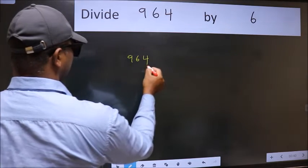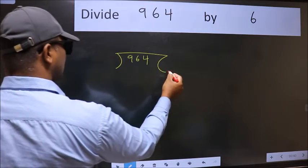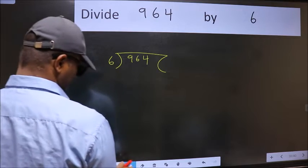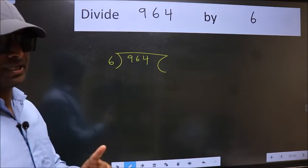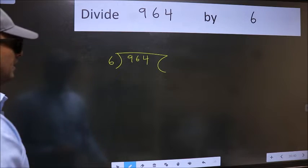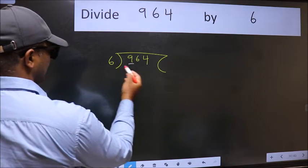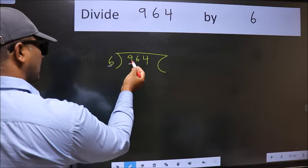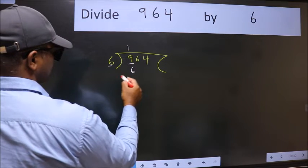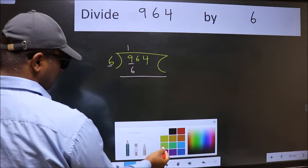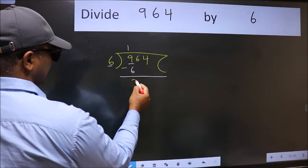964 here, 6 here. This is your step 1. Next, here we have 9 and here 6. A number close to 9 in the 6 table is 6, once 6. Now we should subtract. We get 3.